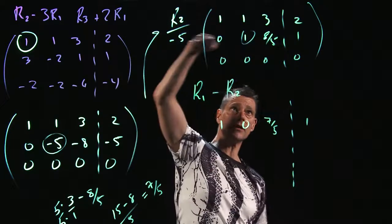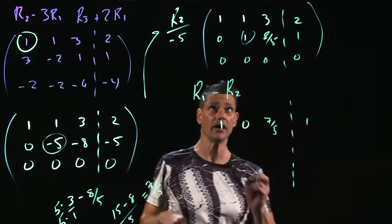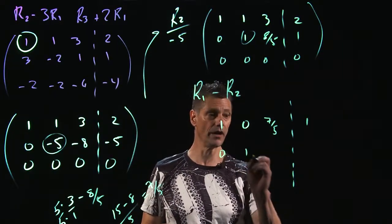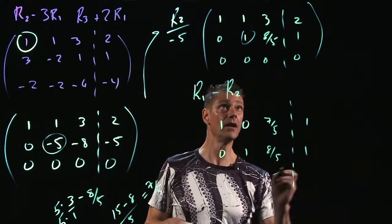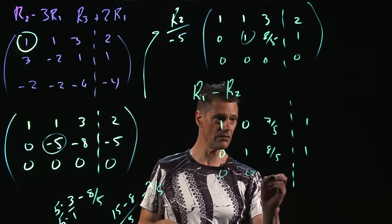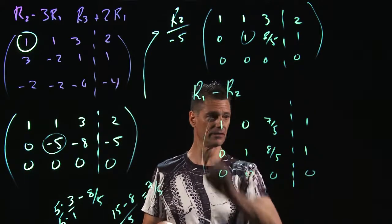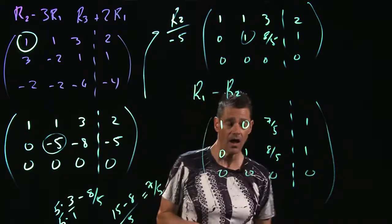And now, so now I'm just going to recopy this over, right? And so this is 0, 1, 8 fifths, and 1. And this is 0, 0, 0, 0.